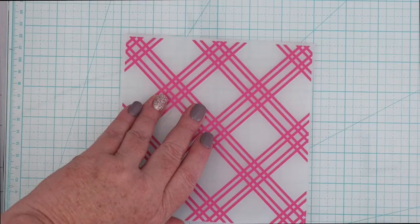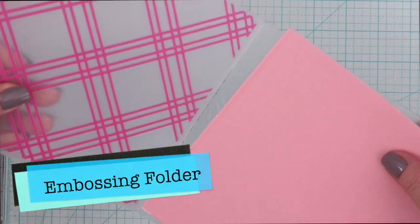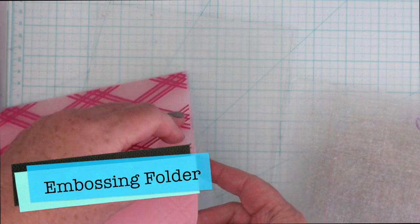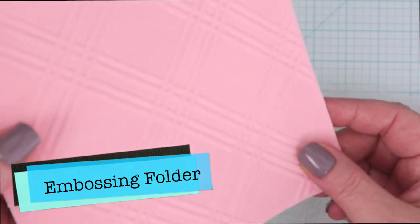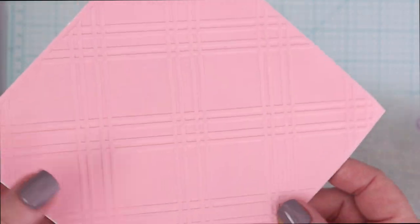If you haven't seen my first embossing folder video you need to check that out but for now let me just share that you can absolutely use embossing folders with flock transfer sheets. So just place a piece of flock inside your embossing folder just like you would paper and when it comes out it is embossed and has the flock texture to it.